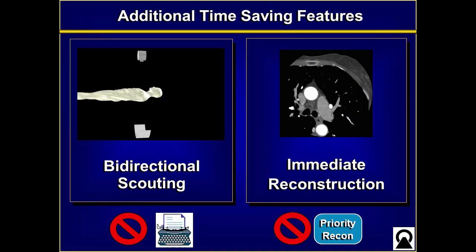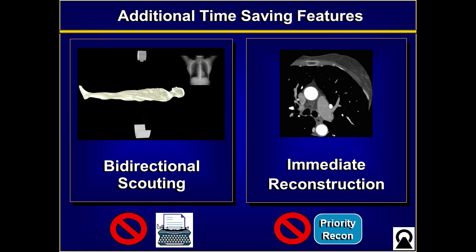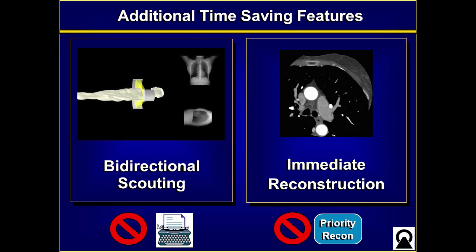Not all of the time savings is due to getting rid of the test bolus — there are other features that allow us to scan more quickly. Our old scanner operated like an old typewriter: you'd type a line, hit the carriage return, type another. Just like that, patients would go into the scanner and get scouted, come back out, then go in again. On our new scanner, as the patient goes in and gets scouted, the tube simply rotates 90 degrees and does the scout on the way out. It's like cup holders in a car — it might not be the reason to buy the car, but it sure makes a big difference.